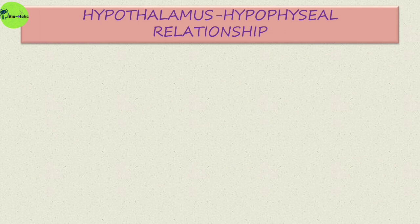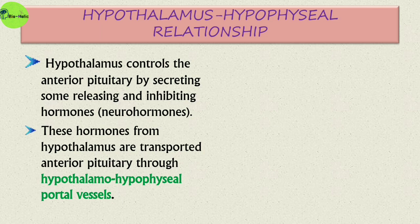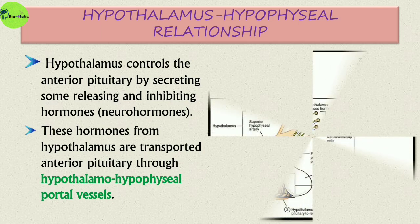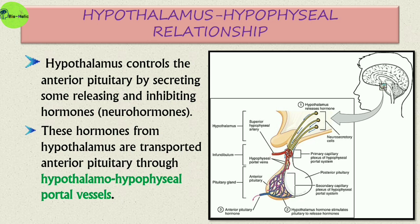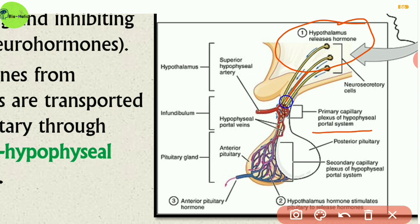We have seen in earlier classes that the hypothalamus and pituitary gland are located adjacently, so there should be some connection between the two. This connection is known as the hypothalamus-hypophysial relationship. The hypothalamus controls the anterior pituitary by secreting releasing and inhibiting neurohormones. These hormones from the hypothalamus are transported directly to the anterior pituitary through the hypothalamus-hypophysial portal vessels. In this picture, you can clearly observe that hypothalamic releasing hormones travel through the hypophysial portal system and reach the anterior pituitary, where they stimulate anterior pituitary hormone secretion.